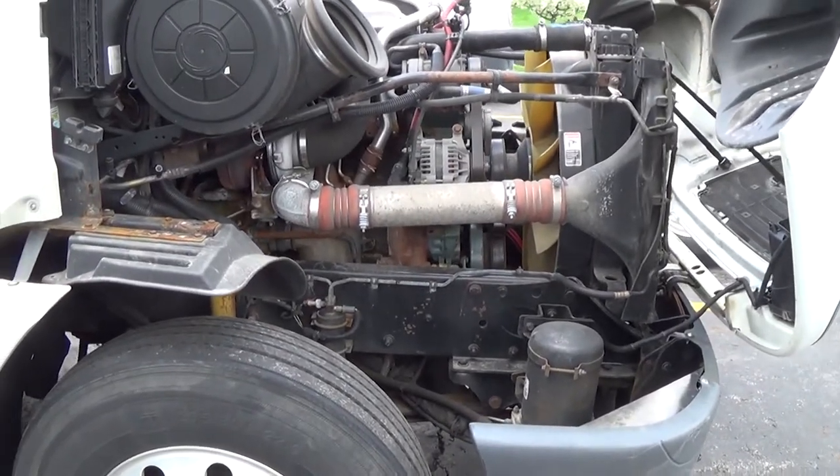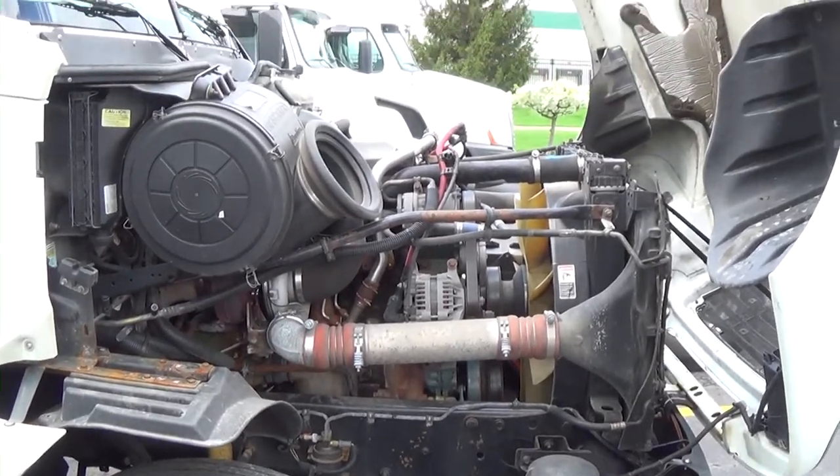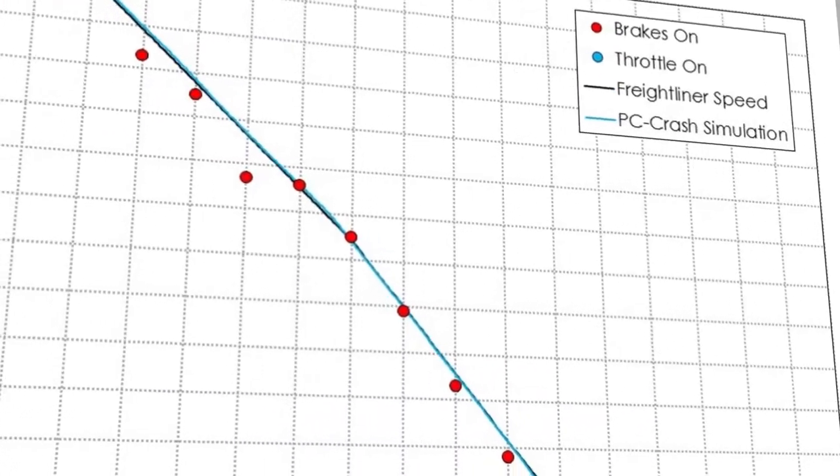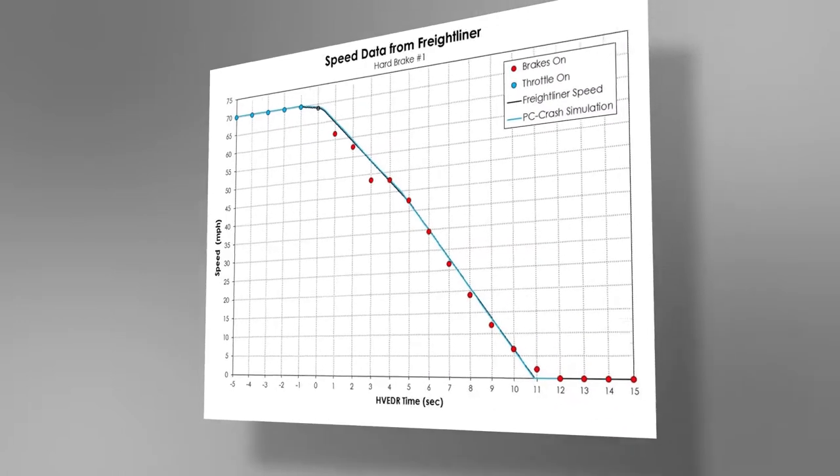Most tractor-trailers these days have event data recorders, typically integral to the engine control module, which record data related to sudden decelerations or hard brake events. In this case, a change in speed of seven miles per hour in a one-second time interval was sufficient to trigger the system. Typically recorded data includes the vehicle's indicated speed, whether brakes are applied, engine RPM, and similar parameters. We can take that data and utilize it in our reconstruction.